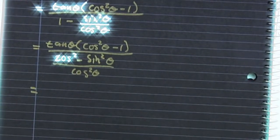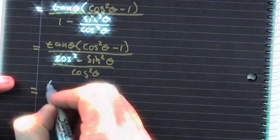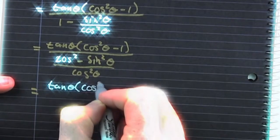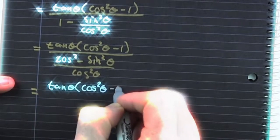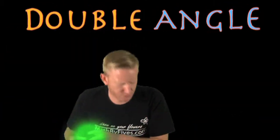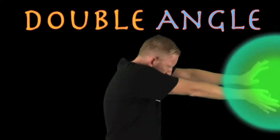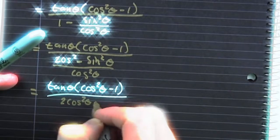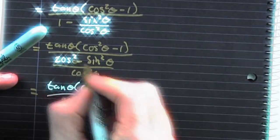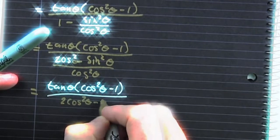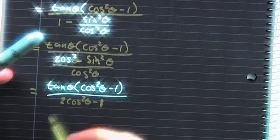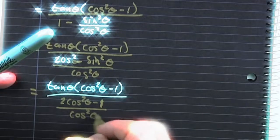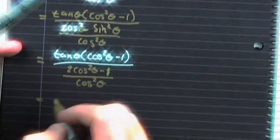There are a couple different ways we can go. We can use the reciprocal, or we can use the double angle. Double angle — all over the cosine squared theta.